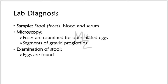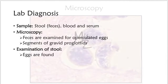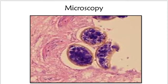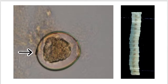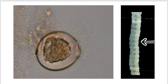Lab diagnosis: we collect samples — stool, feces, blood, and serum. The feces are visualized under the microscope for operculated eggs. These eggs are brown to yellow in color because they are bile stained. Segments of gravid proglottids are also visualized under the microscope. This is how the eggs look in a fecal sample: bile-stained operculated eggs with a knob at the bottom of the shell. On the left is an egg with an operculum and an embryo inside; on the right are sections/parts of the Diphyllobothrium latum body showing gravid proglottids with the rosette uterus inside, which releases immature eggs.